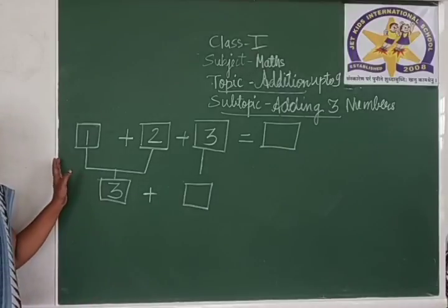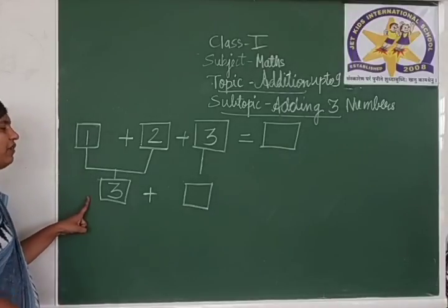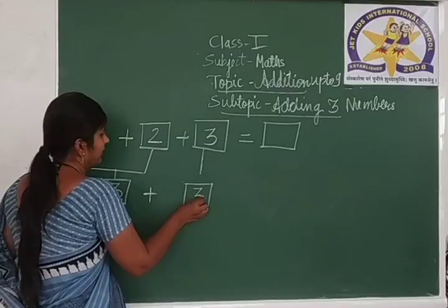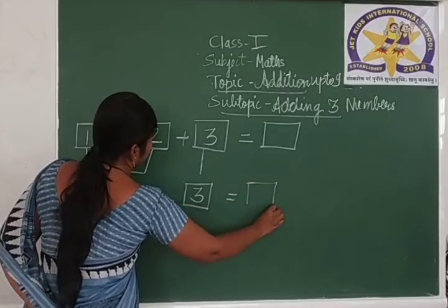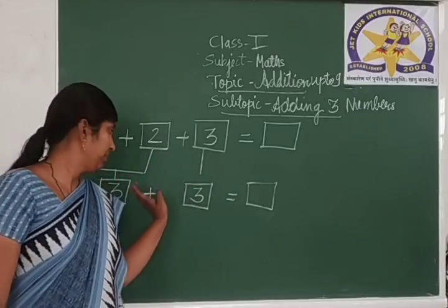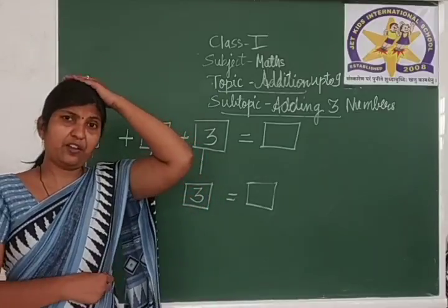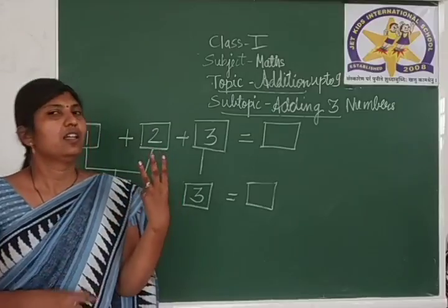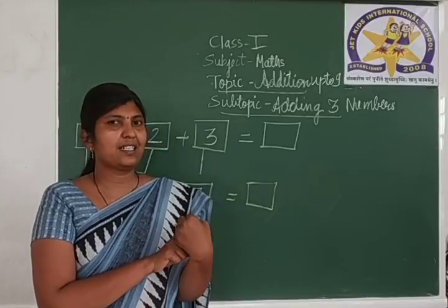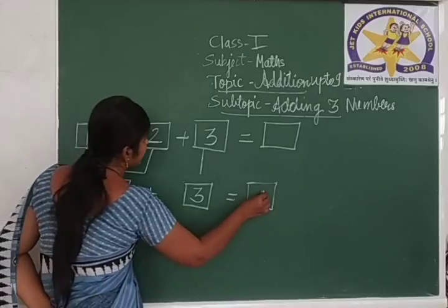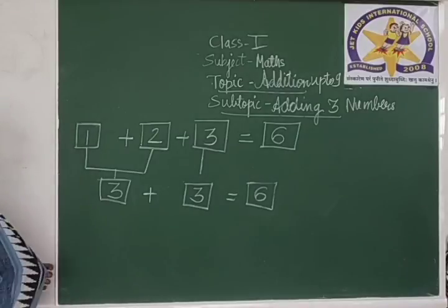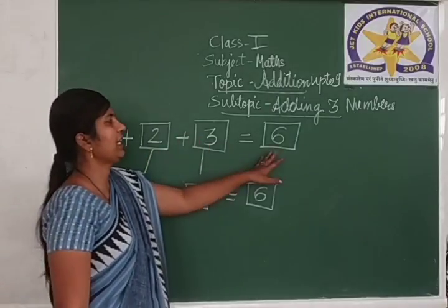What are we going to do? The obtained answer is 3. We are going to add another number to this answer. Write down 3 here. Add the answer we got and the remaining number: 3 plus 3. Keep the first in your mind and put the next on your fingers. Count after 3: 4, 5, 6. So the answer of these 3 digits' addition is 6. Write down 6 here and here also.